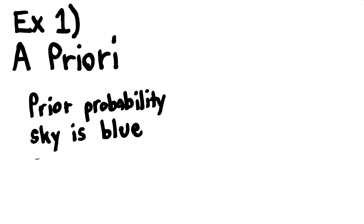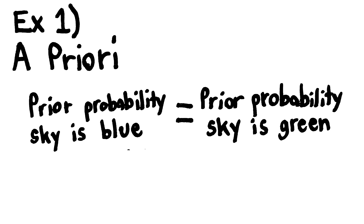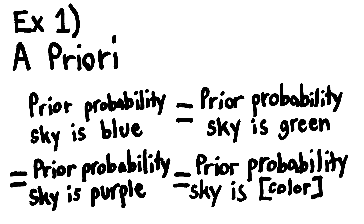To further clarify this idea, let's look at some examples. What is the prior probability that the sky is blue rather than green or purple or some other color? Even though we know the sky is blue, we have no reason a priori to suspect this. So we should not make the prior probability of the blue sky theory any higher than the prior probability of, say, the green sky theory.